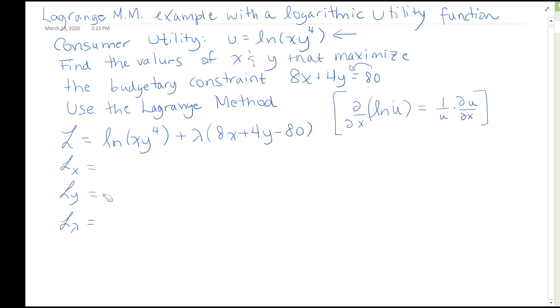So for the first one, partial derivative with respect to x, just take 1 over the xy to the 4 and then times by the partial derivative with respect to x, that will be 1 times y to the 4. Okay, now derivative of this piece with respect to x is just 8. The lambda is out front, it's attached to a term with an x in it, so it just comes along for the ride.